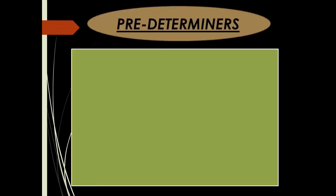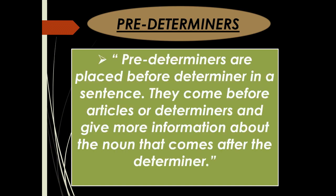Pre-determiners: Pre-determiners are placed before a determiner in a sentence. They come before articles or determiners and give more information about the noun that comes after.